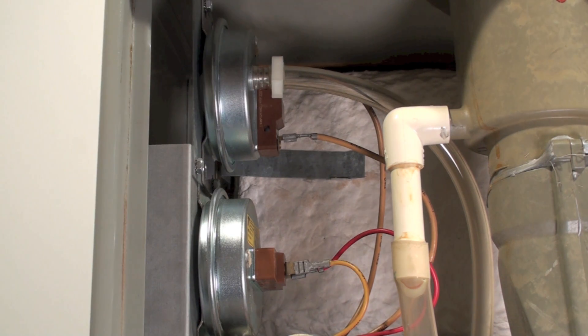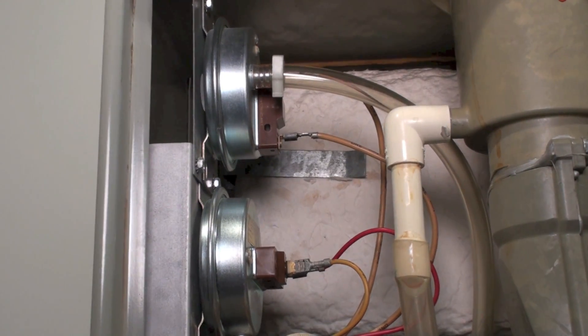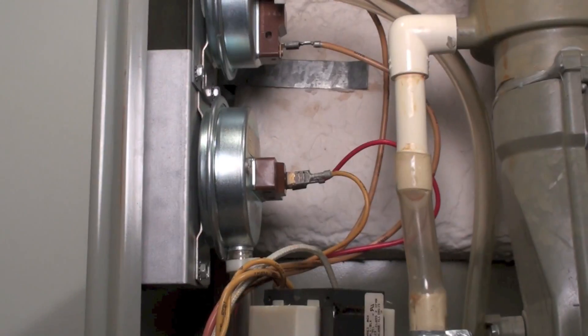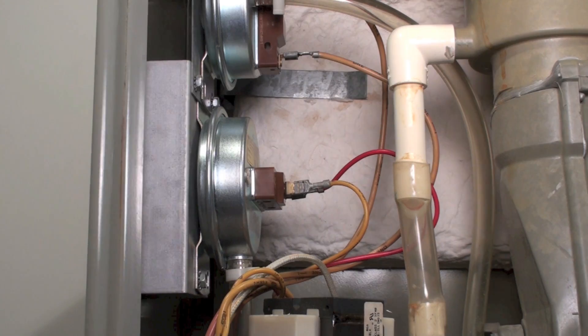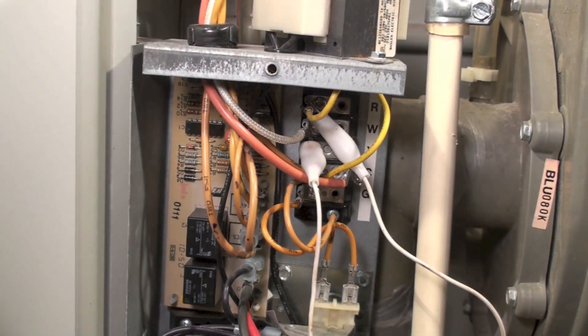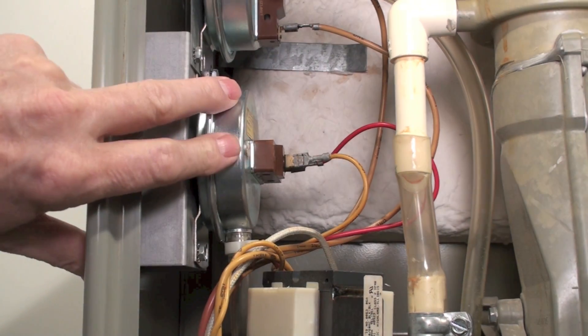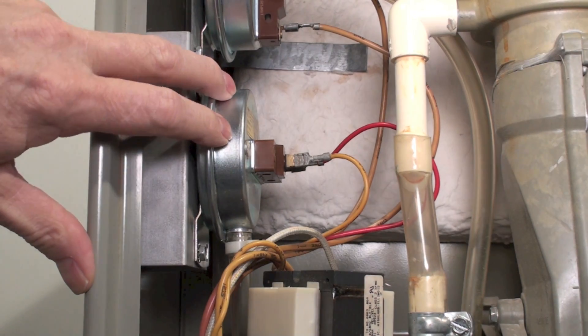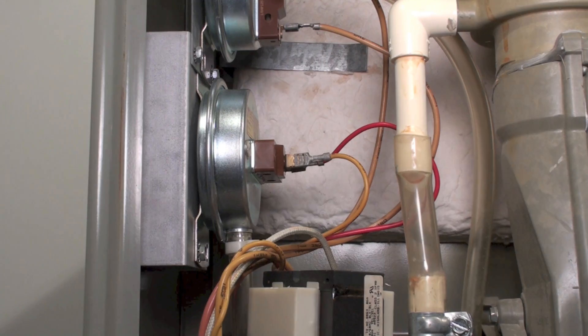The next one is the lower pressure switch. The lower pressure switch is hooked between the power source—and the power source at this point is down at this little board. When the vacuum on this pulls enough—now this one also pulls a vacuum, but it just goes down a little farther down the inlet pipe, closer to the secondary heat exchanger. When this closes, it transfers power down to the ignition control.